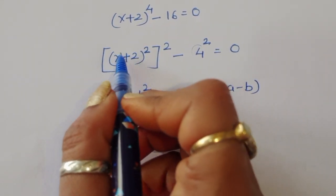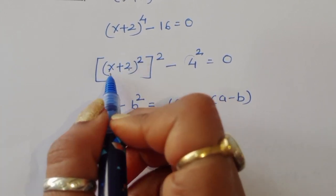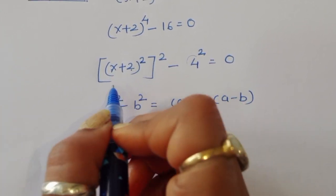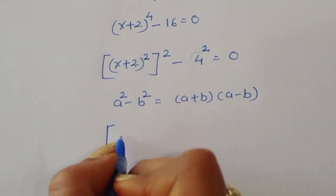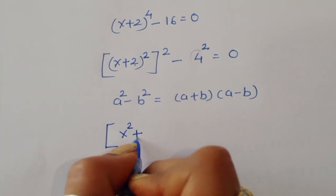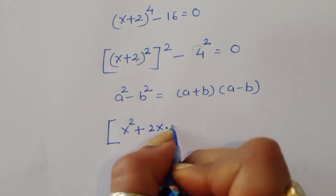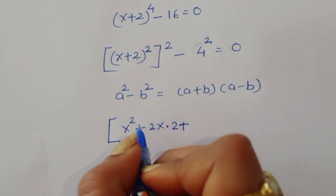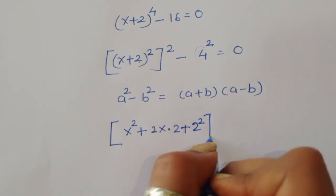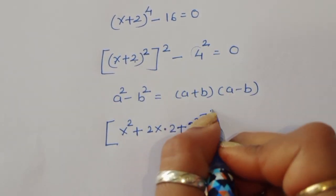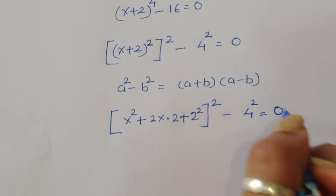Now we are taking (x + 2)². The formula for (x + 2)² is a² + 2ab + b². Here a is x and b is 2, so we get x² + 4x + 4.